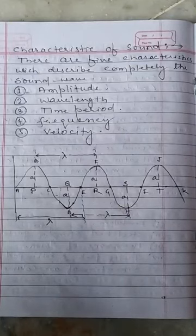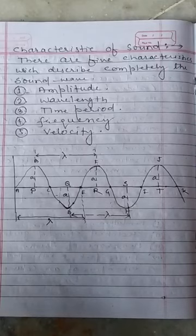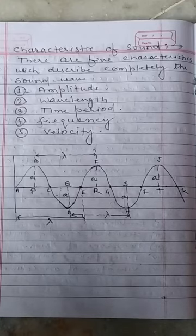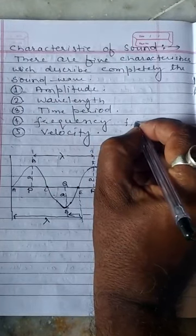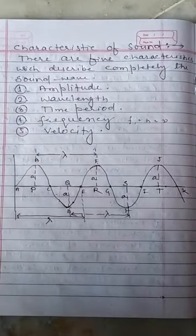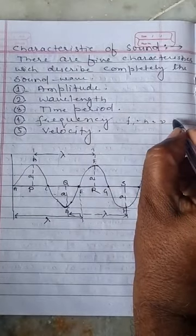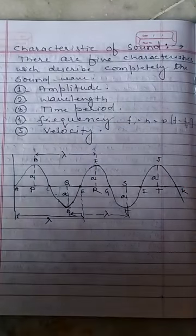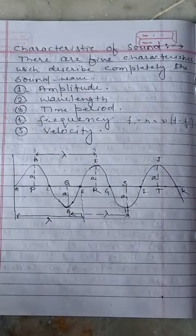Frequency: the number of vibrations made by a particle of a medium in one second is called the frequency of the wave. It is denoted by small 'f', 'n', or the Greek letter nu (μ). Frequency is the reciprocal of time period. The SI unit of frequency is per second, or hertz.